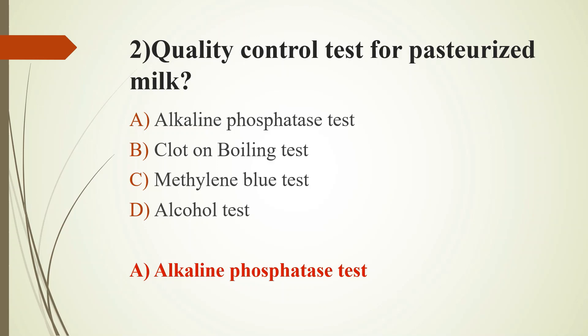The Alkaline Phosphatase test is used to detect the adequacy of pasteurized milk. If the test is negative, it indicates that the enzyme and any pathogenic bacteria have been destroyed during pasteurization. If it is positive, it means the pasteurization process was inadequate. Paranitrophenyl phosphate or disodium phenyl phosphate is used as the substrate for the alkaline phosphatase enzyme.